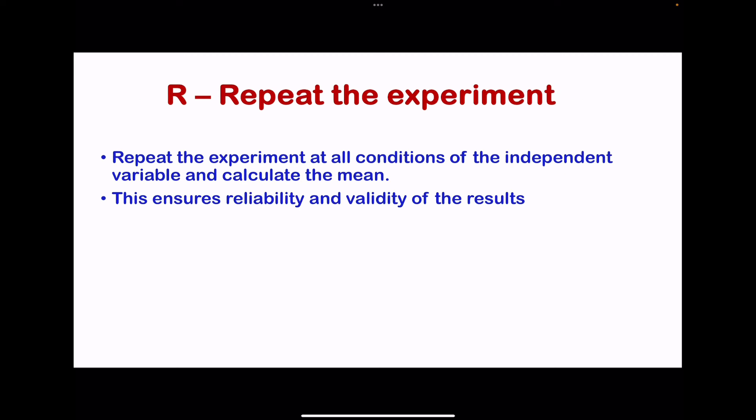The R is for repeating the experiment. Remember to repeat the experiment at all conditions of the independent variable, and then we usually calculate the mean. This will rule out results that are not valid, meaning those that are anomalous, so this is going to ensure reliability as well as validity of the results.